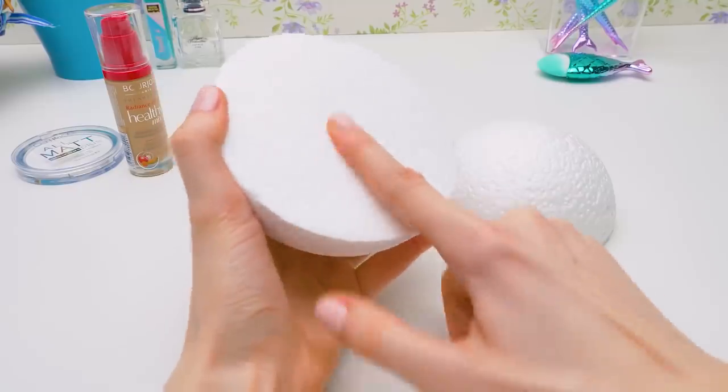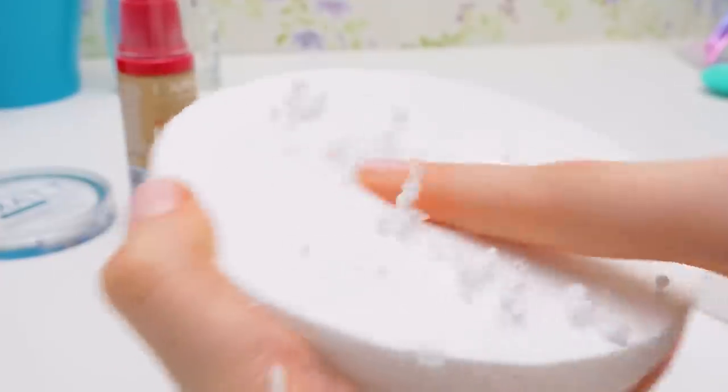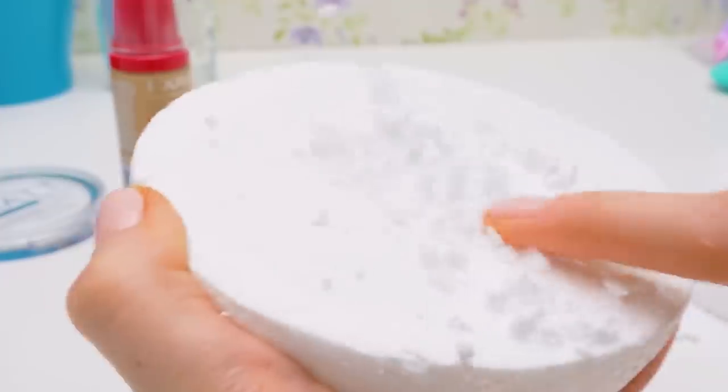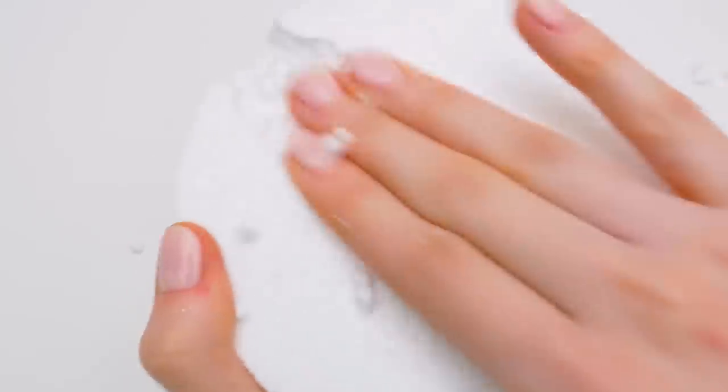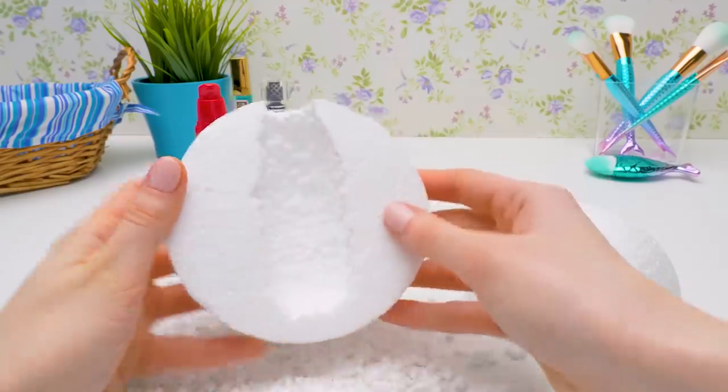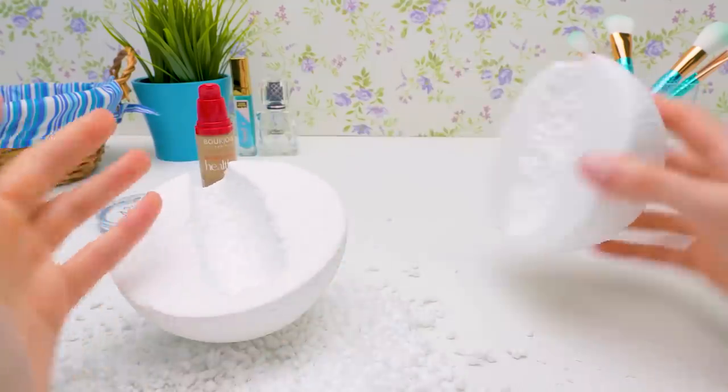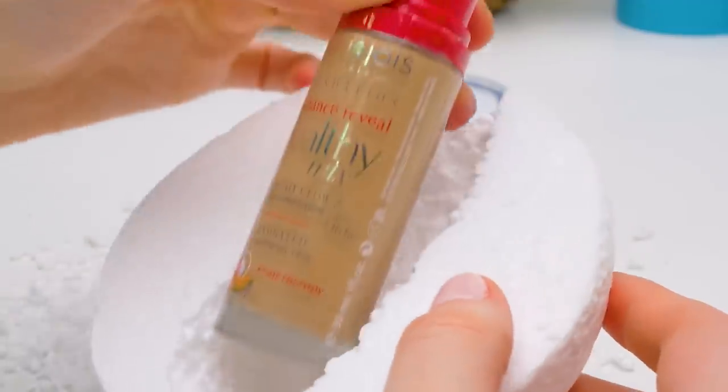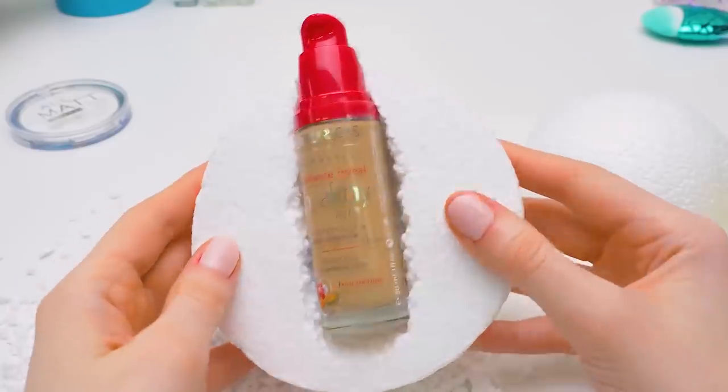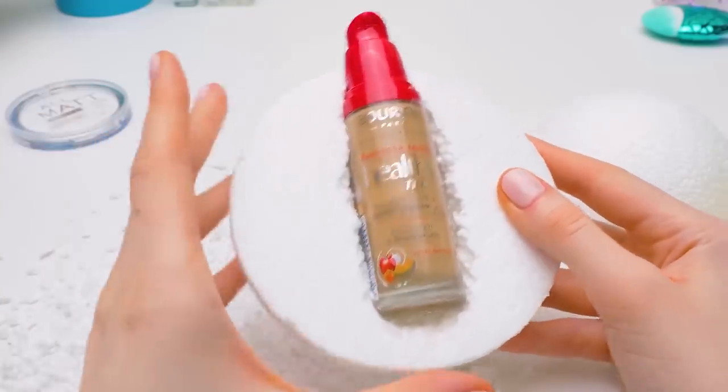We'll make a dent in the ball, the size of the foundation bottle. Styrofoam is so soft, so it's easy to do it with your fingers. Like this. And the same goes for the second half. Great!